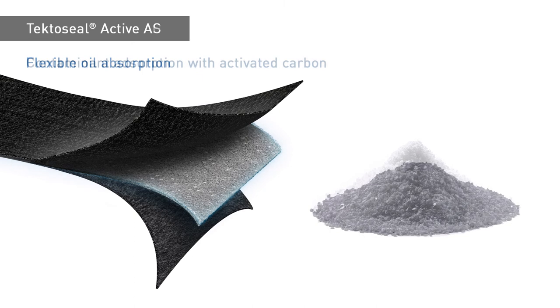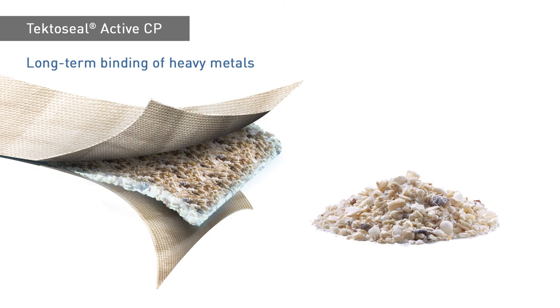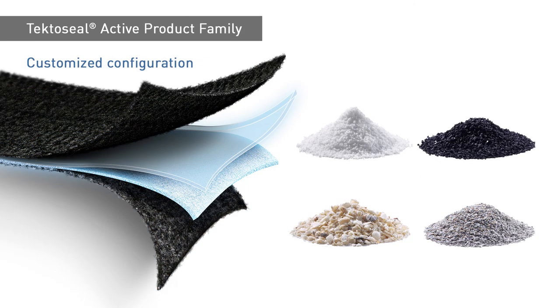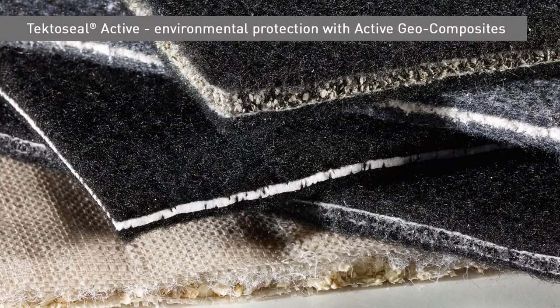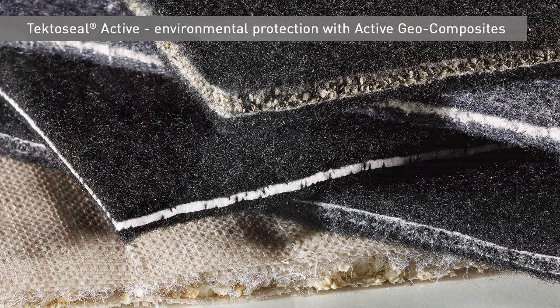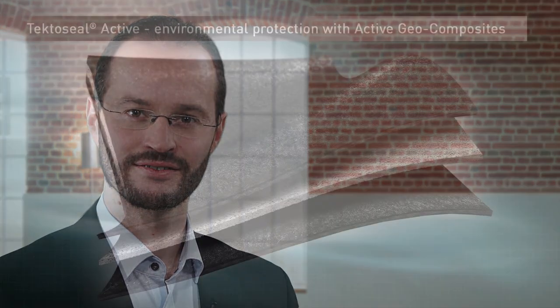The three active materials and active geocomposites that I have described already cover a wide range of applications for the management of anthropogenic environmental pollution. The key feature of the TectoSeal active product family lies in the customized configuration of products in response to site-specific requirements. This applies not only to the active materials, but also to the specified geotextiles. In delivering solutions to particular demands, Husker can draw on its full range of geotextile products. I hope that this presentation has captured your interest. Should you wish to know more about the technical details and Husker's solutions, please take a look at our website or contact us directly. We look forward to providing you with advice and support.